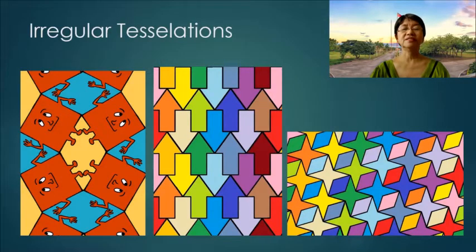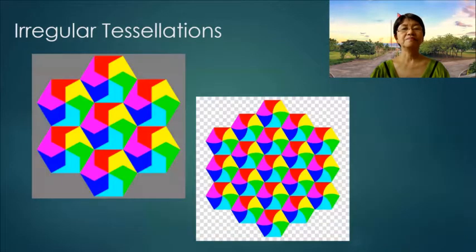Irregular tessellations. These are tessellations which are not made up of regular polygons but instead they are cut outs, but they have to fit perfectly. Here are other examples of irregular tessellations.